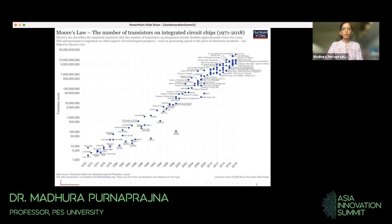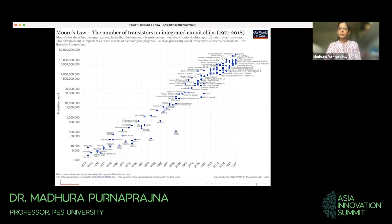This improvement in performance enabled researchers to build better single-core processors, starting in the 1970s and moving on to today's complex multi-core processors, graphic processors, and many-core processors. The density of transistors that can be packed on a single chip has really grown over time.